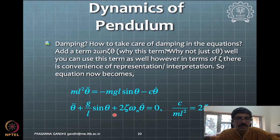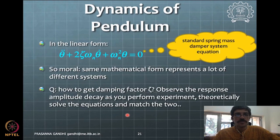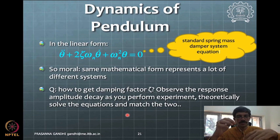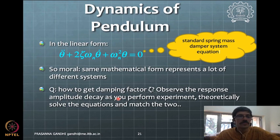If zeta is found to be some value, we know this pendulum system is an underdamped system with that zeta value, and that speaks about its nature. One can do experiments to see how to get the damping factor zeta — for example, timing how long it takes for the amplitude to reach half its original value. By using logarithmic decrement — counting the change of amplitude over oscillations — one can find the damping factor zeta. These experiments give the system parameters.